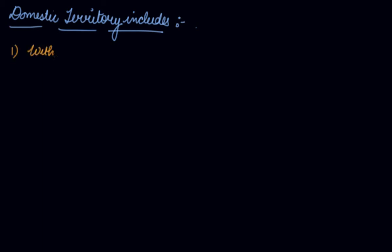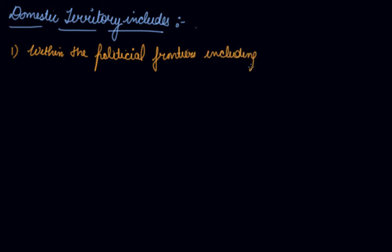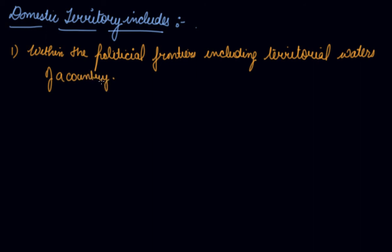The first component is the territory lying within the political boundaries, including the territorial waters of a country. There are various ports being made on the seas or on the coastal area. Some areas or boundaries are considered Indian territory because India has claimed that boundary, so these are included in the domestic territory.